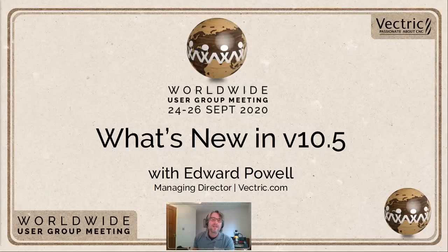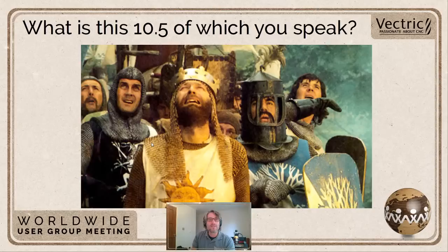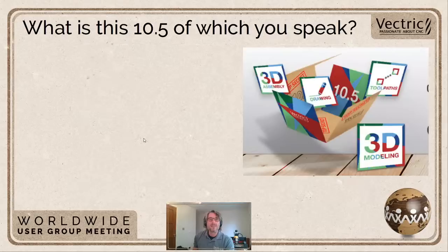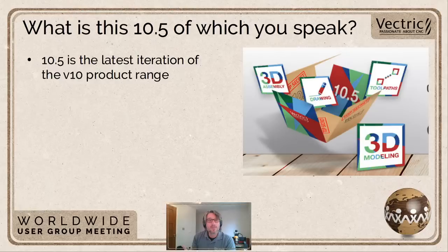So let's start by considering exactly what is 10.5. It is a little bit unusual in Vectric, but we like to give away quite a big release free of charge. We have major releases every 18 months or so, and then in the middle we tend to have a big feature-rich release. In its simplest form, 10.5 is simply the latest version of 10. So if you have version 10 of any of our products — Cut2D, VCarve, Aspire — you are entitled to 10.5 for free.